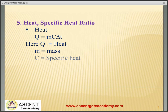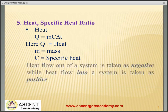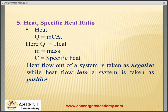Heat is basically the form of energy that transfers across the boundary by virtue of temperature difference. Thus, heat Q equals mcΔT, where c is the specific heat. If heat is transferred at constant pressure, it will be m·cp·ΔT. If heat is transferred at constant volume, it will be m·cv·ΔT. Sign convention for heat: heat flow out of the system is taken as negative, and heat flow into the system is taken as positive. Heat is also a path function and an inexact or imperfect differential.